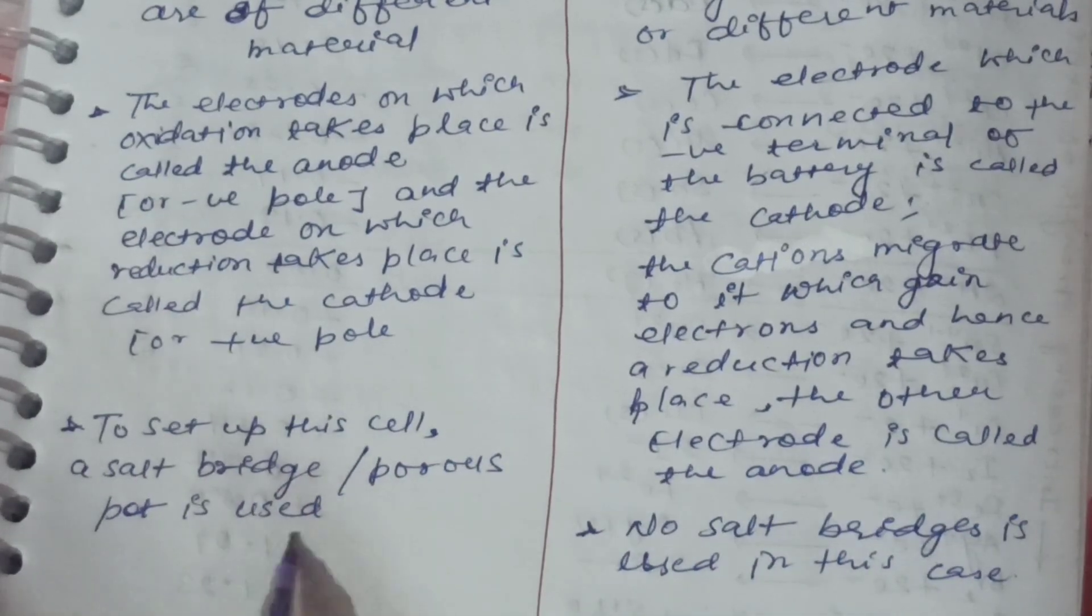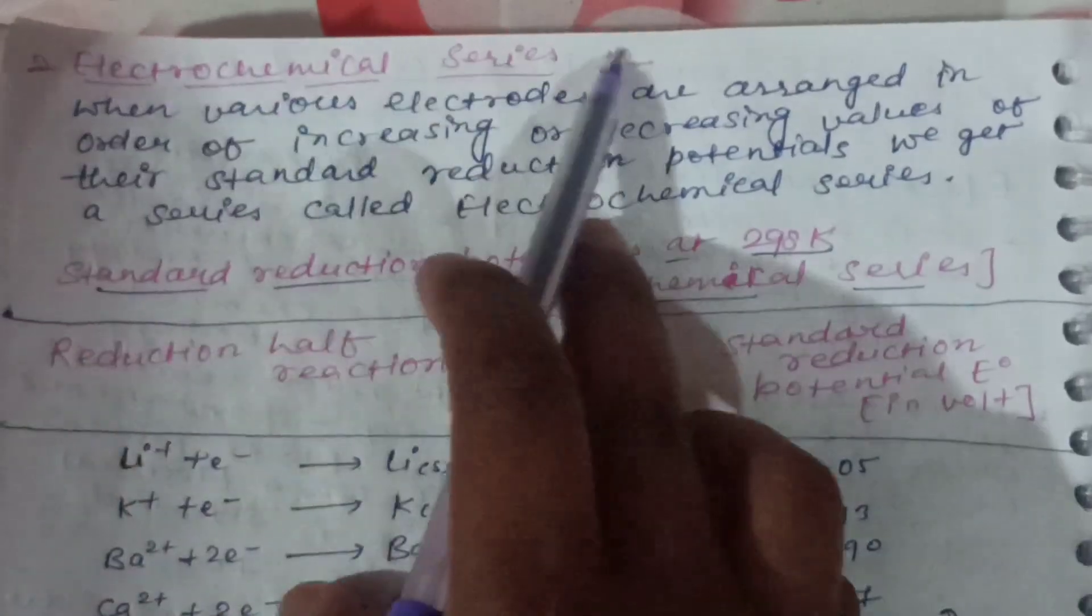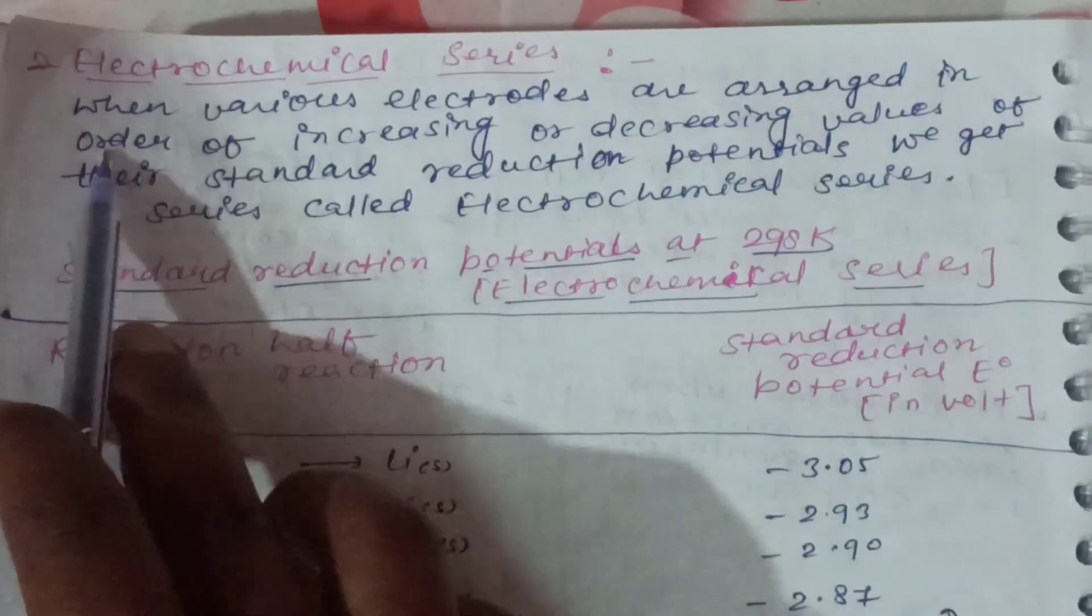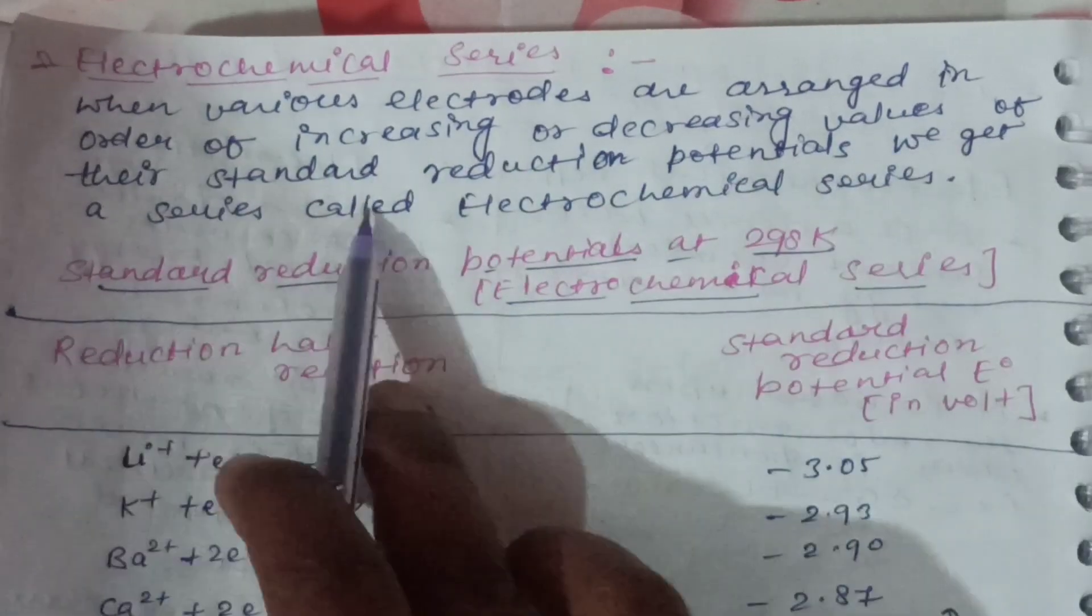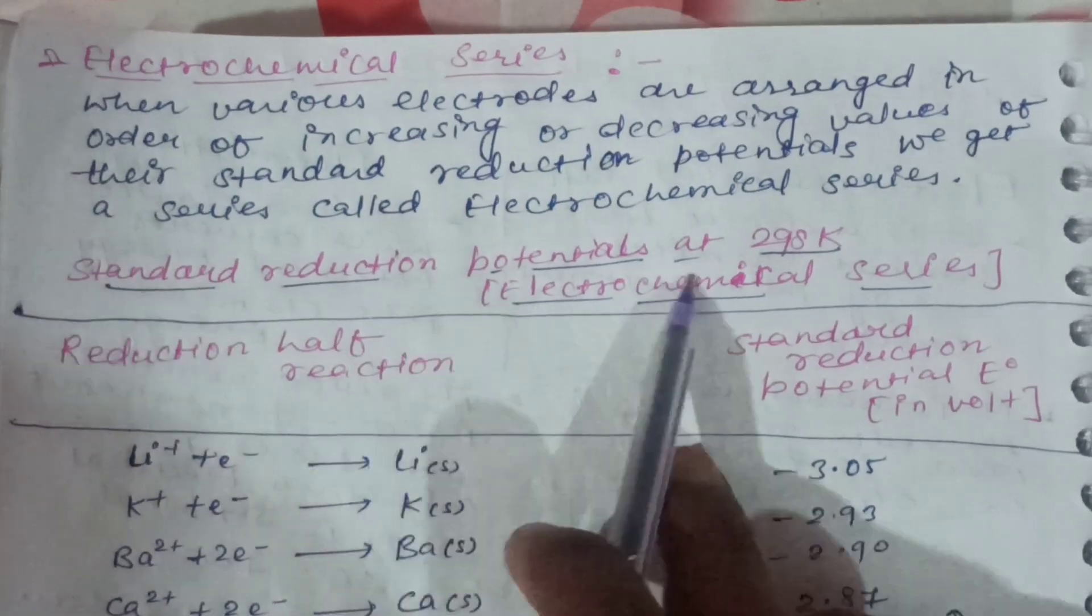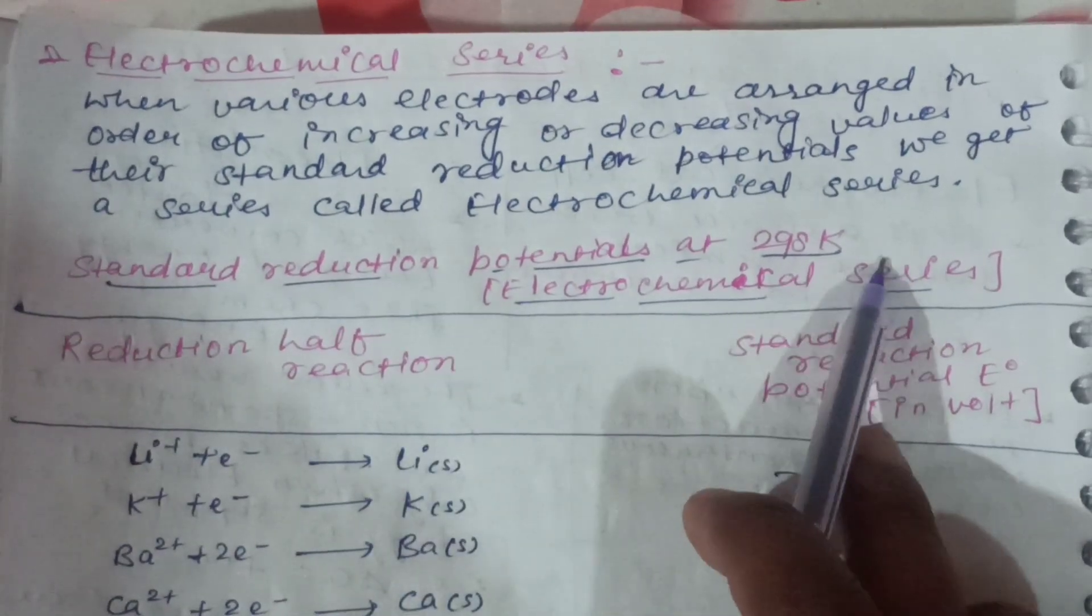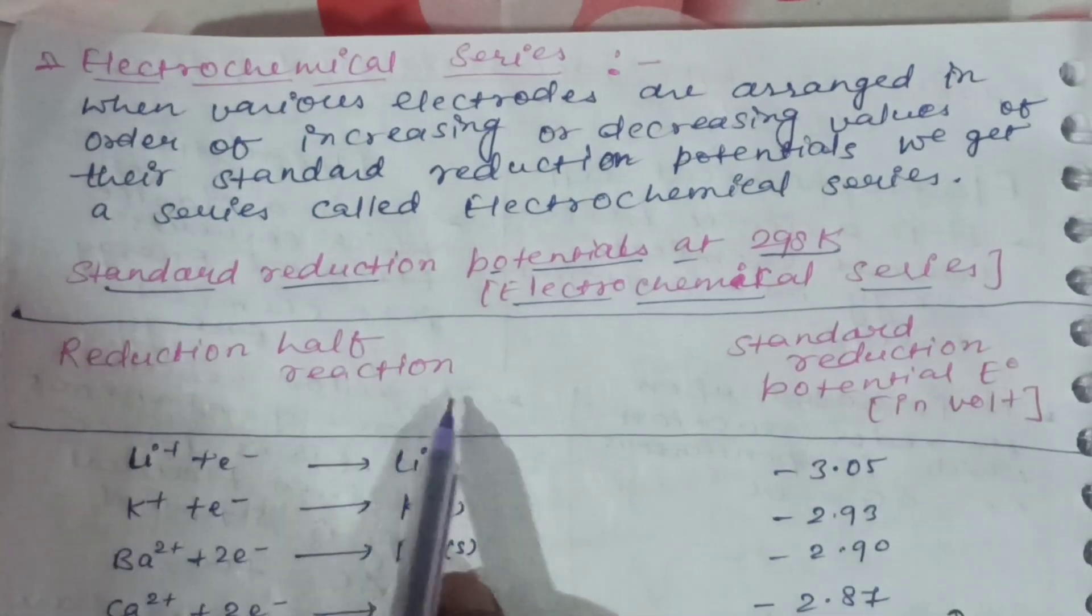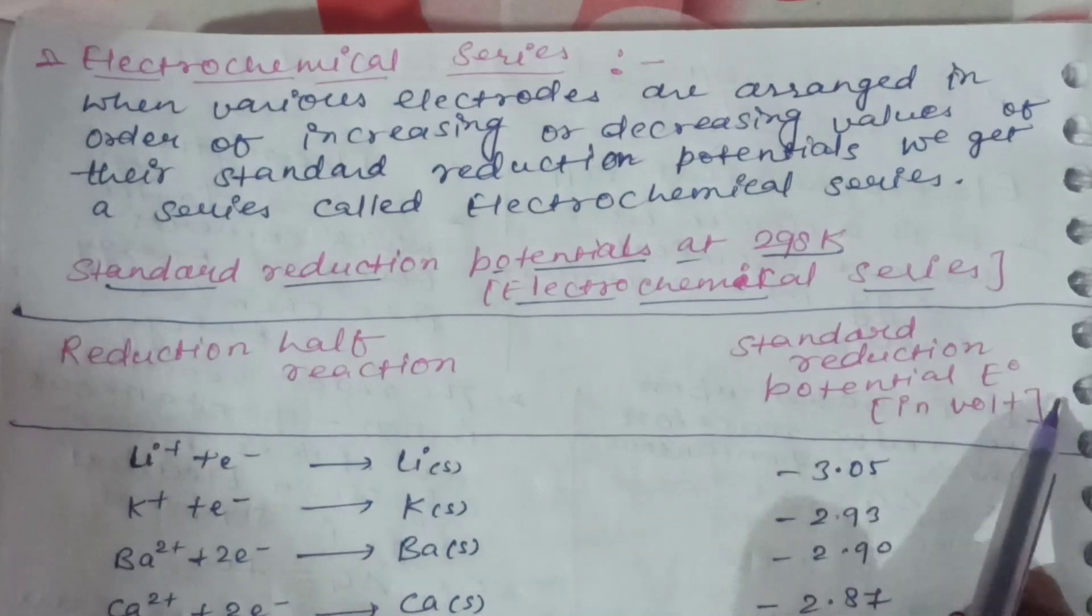To set up this cell, a salt bridge or porous pot is used. No salt bridge is used in this case. Electrochemical series: when various electrodes are arranged in order of the increasing or decreasing value of their standard reduction potential, we get a series called the electrochemical series. A standard reduction potential at 298 Kelvin.